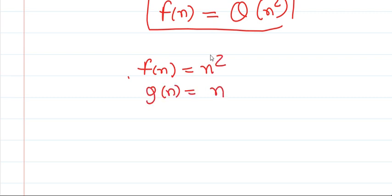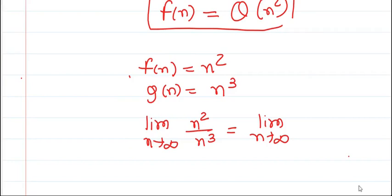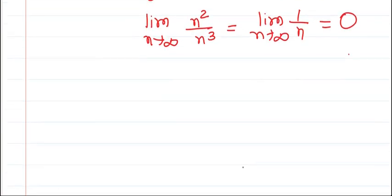Let's take another example. Let f(n) = n² and g(n) = n³. Applying the limit definition: limit as n → ∞ of f(n)/g(n) = limit as n → ∞ of n²/n³ = limit as n → ∞ of 1/n, which equals zero. Since the limit is zero, g(n) is dominating compared to f(n), so we can write f(n) = Big O of g(n), which is f(n) = Big O of n³.